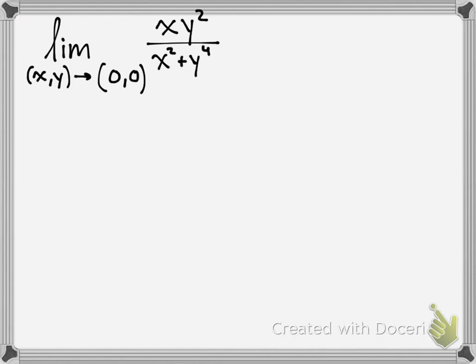Okay, so now we're going to work on a limit that doesn't exist. If you try to do the plug and chug method, it won't work. And so you actually have to understand what you're doing. So if you do plug it in, you'll get 0 over 0.